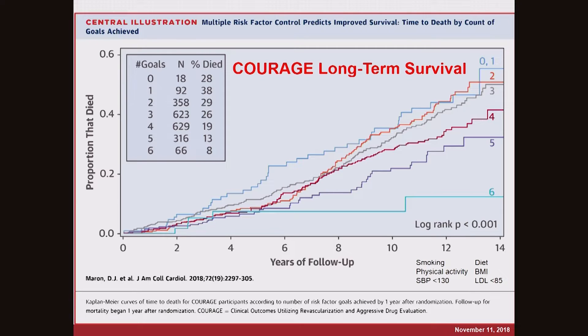From the COURAGE trial, which I spent about a decade working on, we did a long-term follow-up. These were all people with coronary artery disease documented on cardiac catheterization — all had at least a 70% narrowing in at least one artery. We compared stenting versus good medical therapy and found after about four and a half years that there was no difference in the incidence of death or heart attack between the groups. Stenting didn't prevent heart attacks, and there wasn't any difference in survival either.